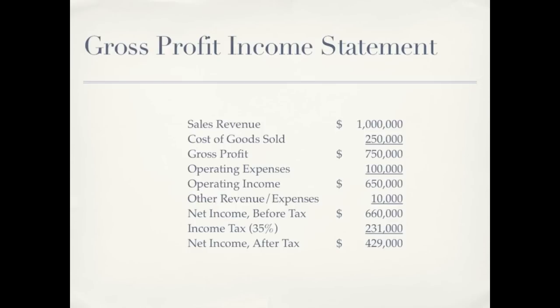Something new in this income statement — the gross profit income statement — that we haven't seen before is cost of goods sold. We now know where that comes from: when we sell a product made up of materials, labor, and overhead, those costs are not expensed until the product is sold, and when the product is sold those costs are called cost of goods sold.